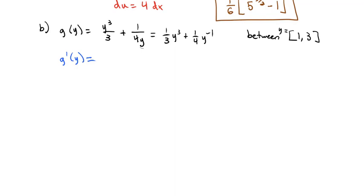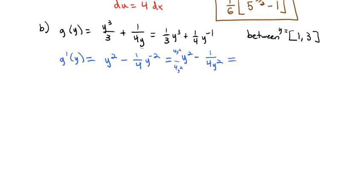Take the derivative, because we need that in our formula. We bring the 3 out front and it reduces, so we're just left with y squared, plus bringing the negative 1 out front makes it minus 1/4 y to the negative 2. Doing some algebra to move that y to the negative 2 into the denominator gives us y squared minus 1 over 4y squared. Making this into one big fraction gives us (4y to the fourth minus 1) over the common denominator of 4y squared, squared.